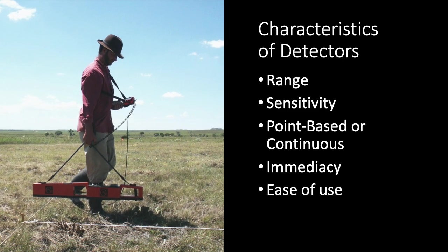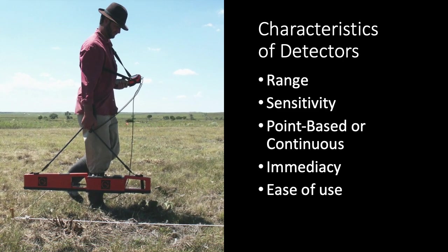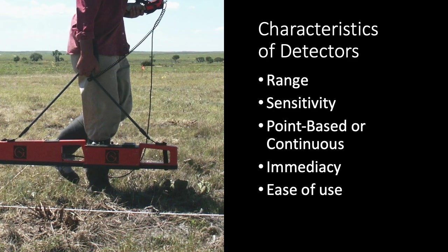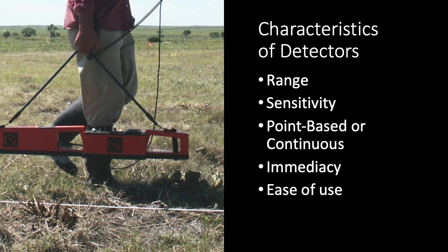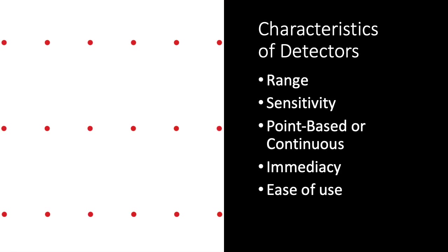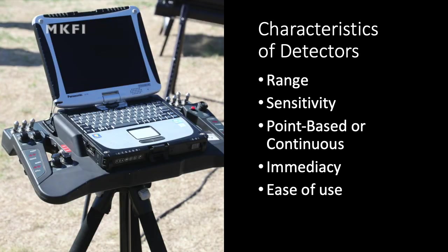Some kinds of detectors give us continuous or nearly continuous readings along a transect, as in the case of electromagnetic survey seen here, or ground-penetrating radar. Other detectors involve making measurements at discrete points along a transect, often on some kind of grid.